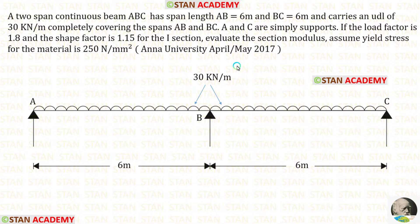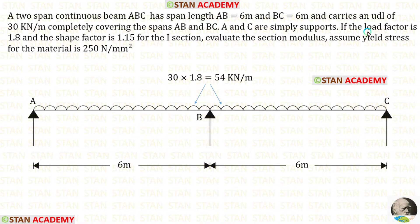In this question, first we have to find the plastic moment capacity, and later we can find the section modulus. The load factor is given as 1.8. Let us multiply the load 30 with 1.8 — we will get 54 kN per meter.